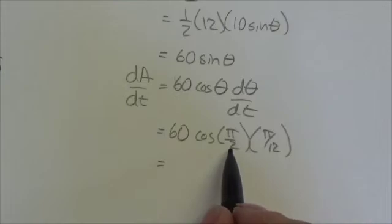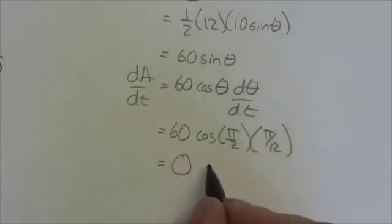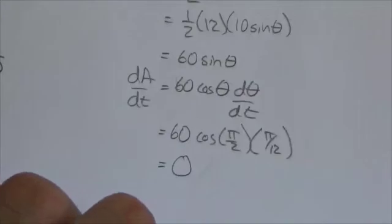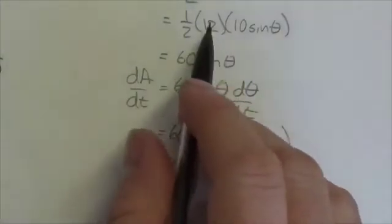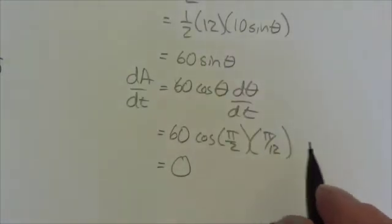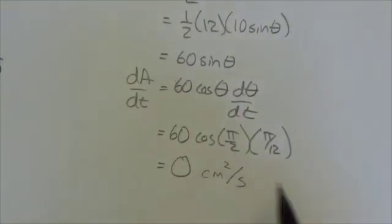So let's evaluate this. The cosine of π/2 is 0. So this whole thing goes to 0. This is going to be 0 radians, or sorry, in this case right here, not radians here. Remember that what we had here, the base times height, these were both measured in terms of centimeters. So this will be 0 centimeters squared per second.